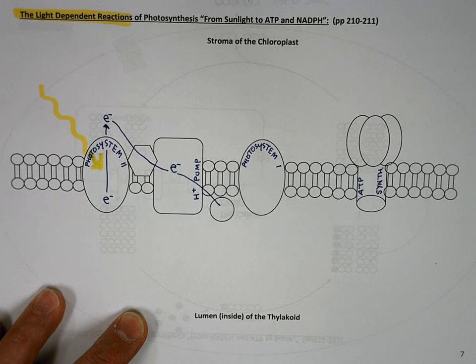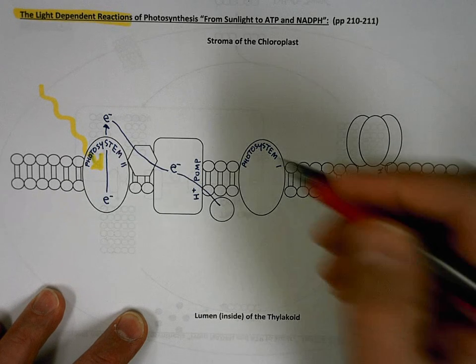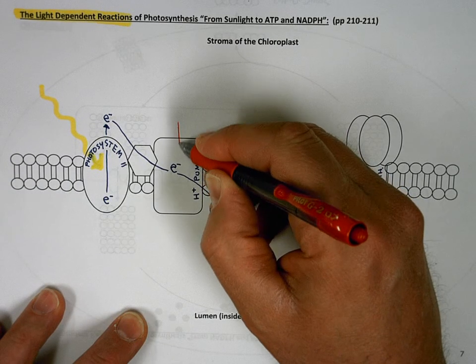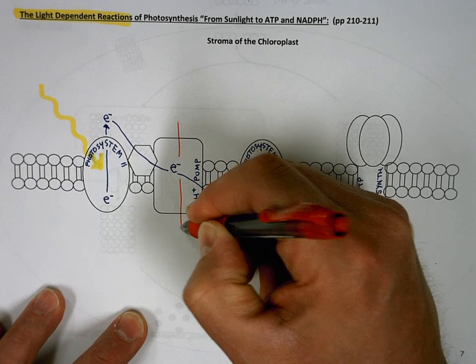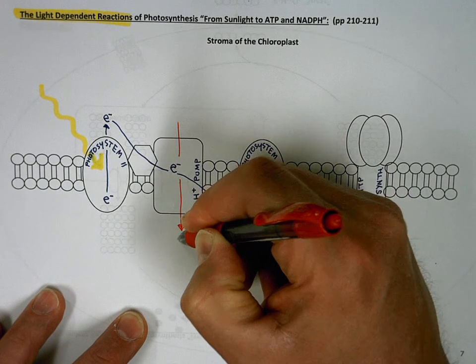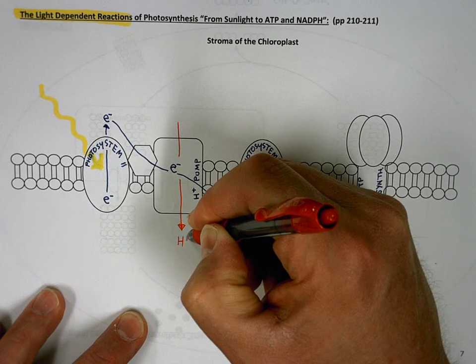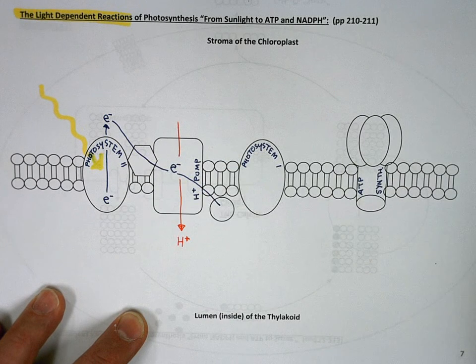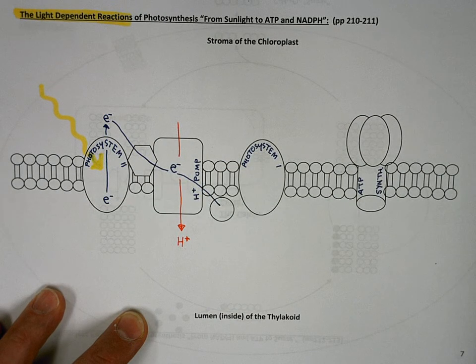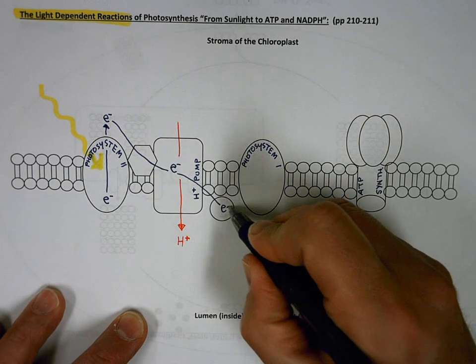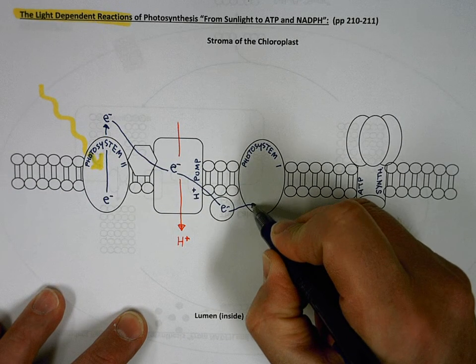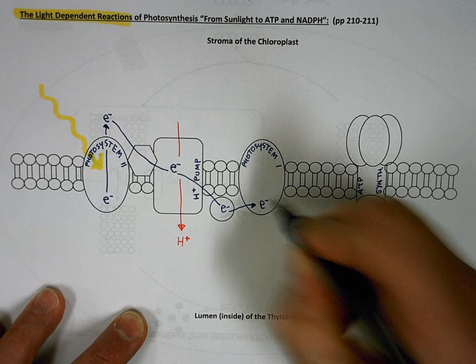And in this case, hydrogen ions are pumped into the thylakoid lumen or inside. And then this electron passes over here to photosystem one.